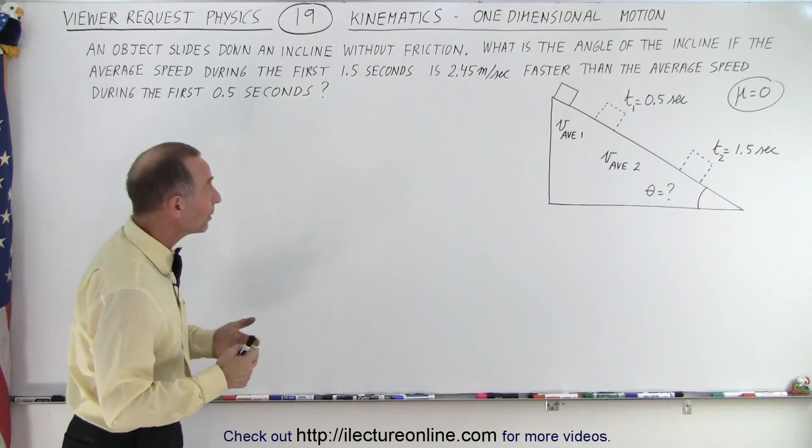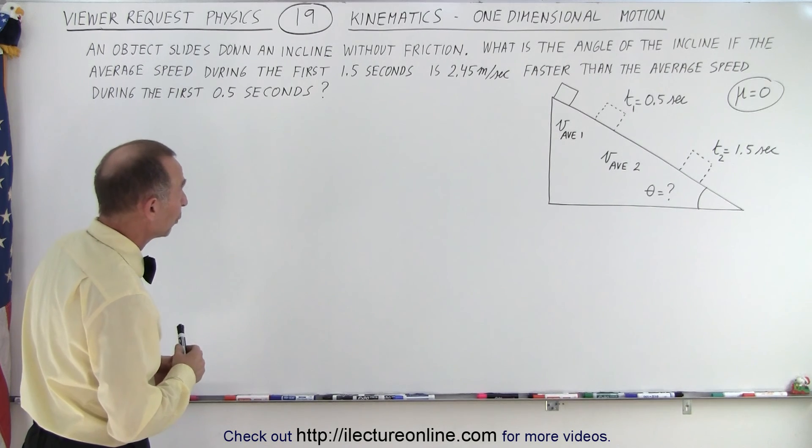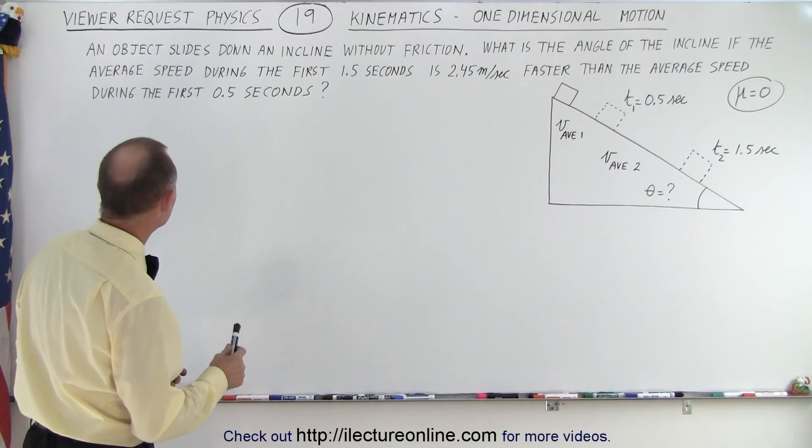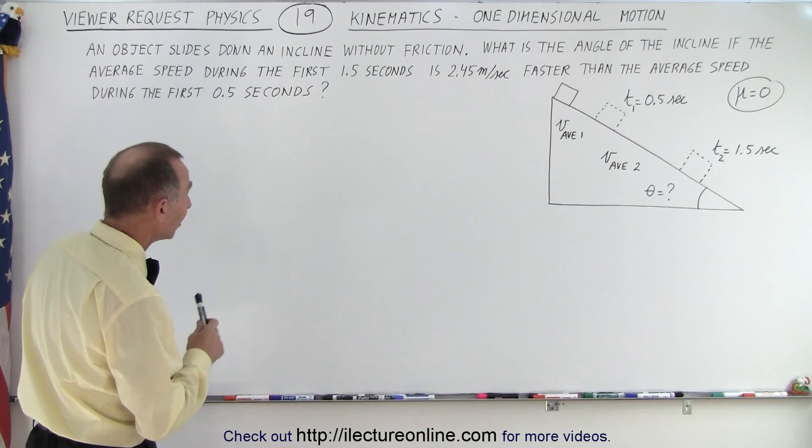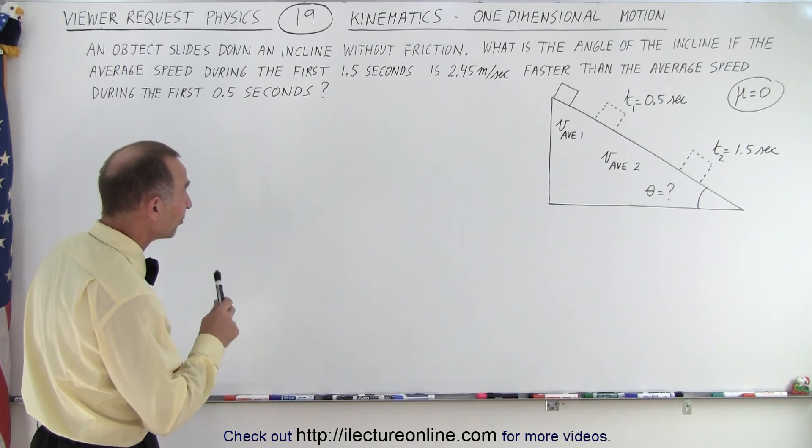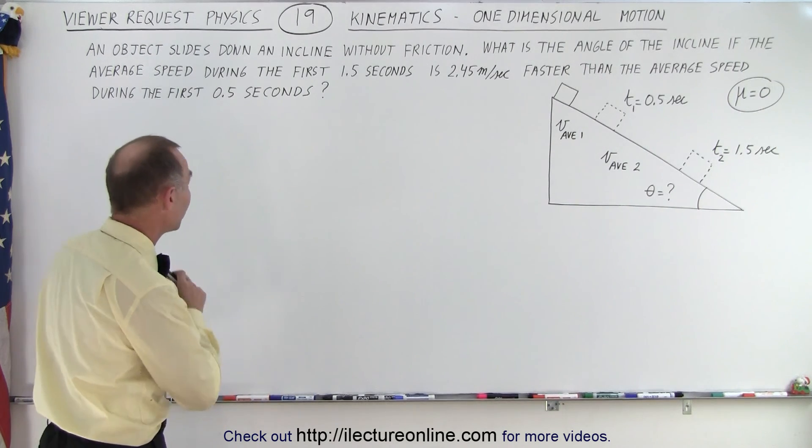So let's read the problem together. An object slides down an incline without friction. What is the angle of the incline if the average speed during the first 1.5 seconds is 2.45 meters per second faster than the average speed during the first 0.5 seconds?